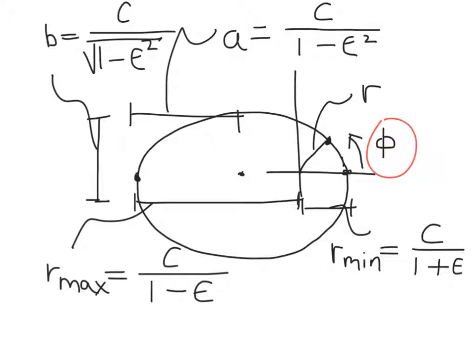The radial distance at any point in the orbit is shown by this vector here. As the objects revolve around one another, the distance between them goes from r min all the way out to r max.